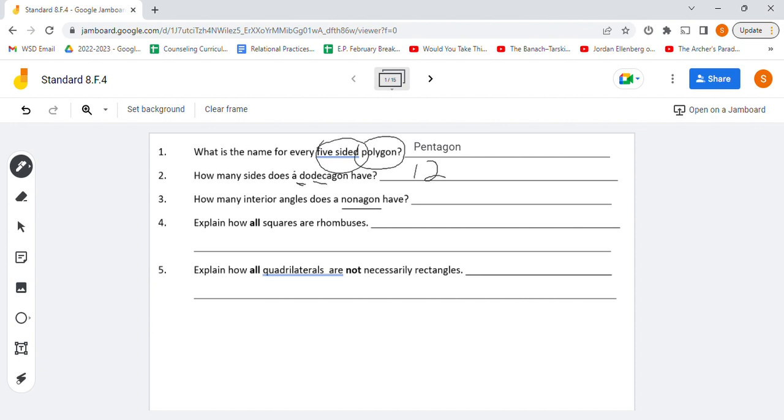Nonagon. This is a name for nine. So how many interior angles does a nonagon have? That would be nine.